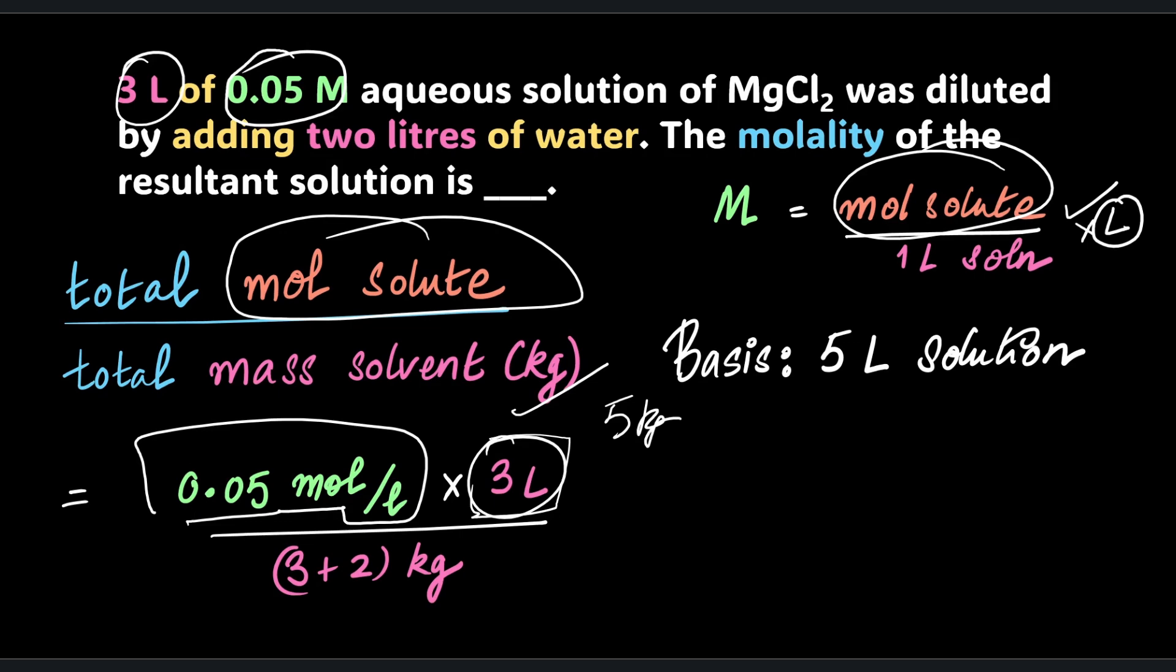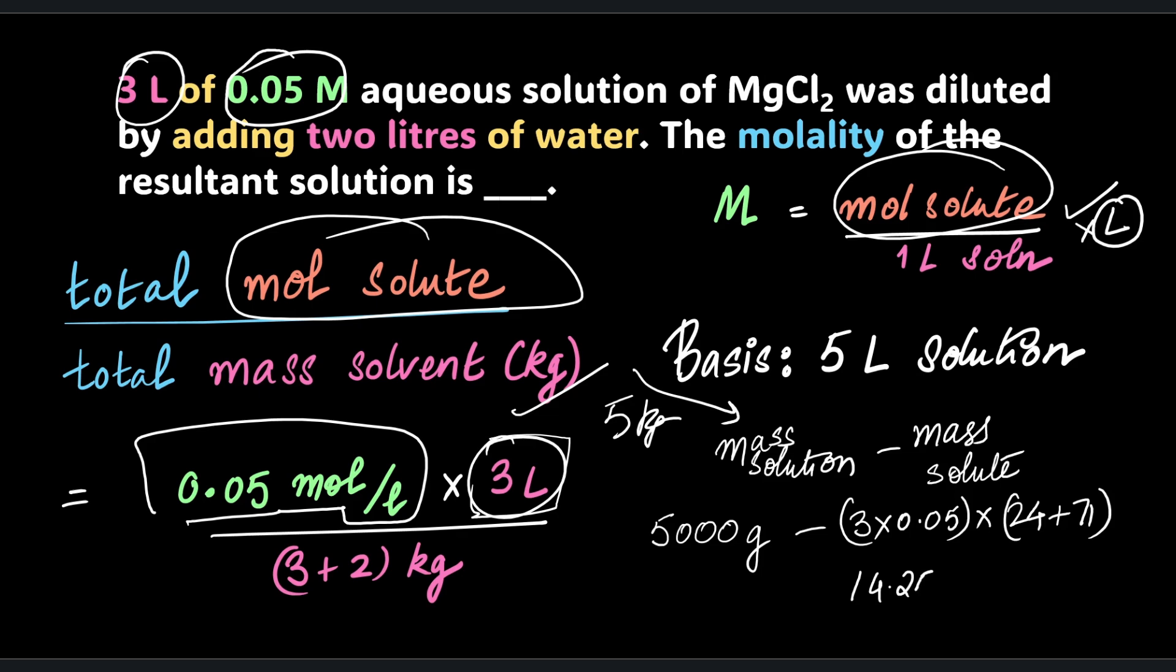While there's a great approximation, if you are very specific, the mass of the solvent is going to be that of the solution minus the mass of the solute. But since the mass of solute is so tiny, this approximation is valid for most calculations. To be specific, I'm going to write: 5 kilograms is 5000 grams. I've got 3 times 0.05, that's the number of moles, times the molar mass of MgCl2, which is 24 for Mg plus 2 chlorine with a mass of 71 (35.5 into 2). It's a very tiny number. But if you want to be specific, the denominator should be this. Of course you divide by a thousand because this has to be in kilograms.